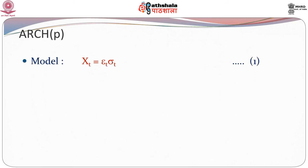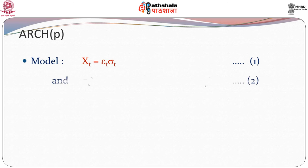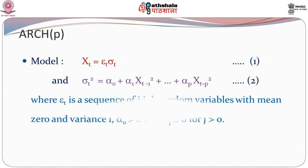Let us look at the ARCH(p) model in general. We have the model: x_t equals epsilon_t times sigma_t — we will call this the first equation. Here, sigma_t squared is given by alpha_0 plus alpha_1 times x_{t-1} squared plus, up to alpha_p times x_{t-p} squared — we will call this the second equation. Where epsilon_t is a sequence of IID random variables with mean 0 and variance equal to 1.